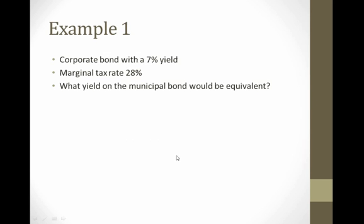For our first example, consider a corporate bond with a 7% yield, a marginal tax rate of 28%, and let's think about what yield on the municipal bond would be equivalent. Given that the municipal bond gets favorable tax treatment, the yield doesn't need to be as high to compete with a corporate bond. How high does it need to be?